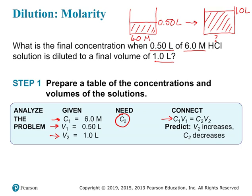We also want to make a prediction: since we're adding more water, the volume is increasing, so the concentration should decrease. We expect something less than 6 moles per liter. If we get something greater than 6 at the end, we know we made an error and should go back and check our work.